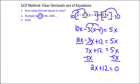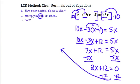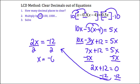I have some like terms on the left: 10x and negative 3x give me 7x plus 12 equals 5x. Now I have variable terms on both sides, so I'll get rid of the smaller one — minus 5x from both sides — which gives me 2x plus 12 equals 0. I need to subtract 12 from both sides, giving me 2x equals negative 12. Dividing both sides by 2, I get a solution of x equals negative 6.